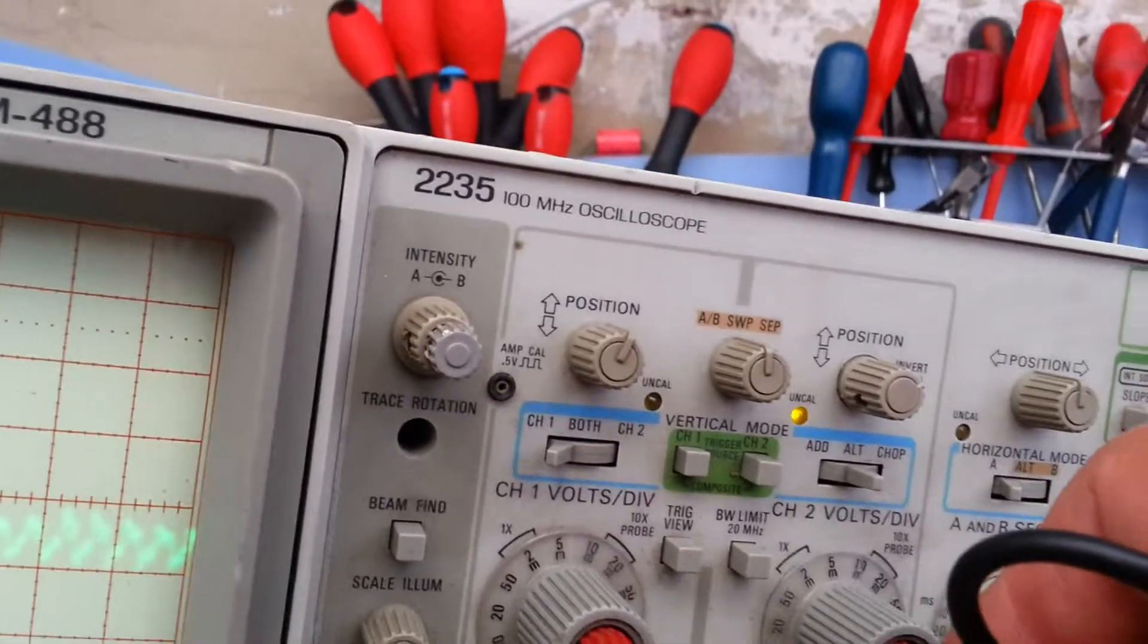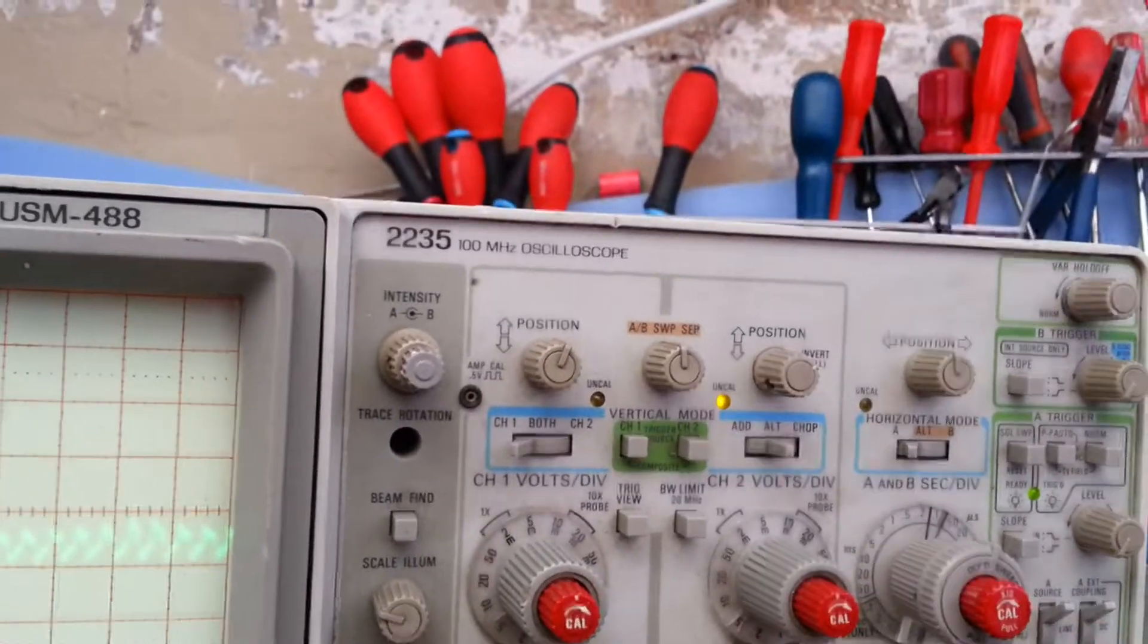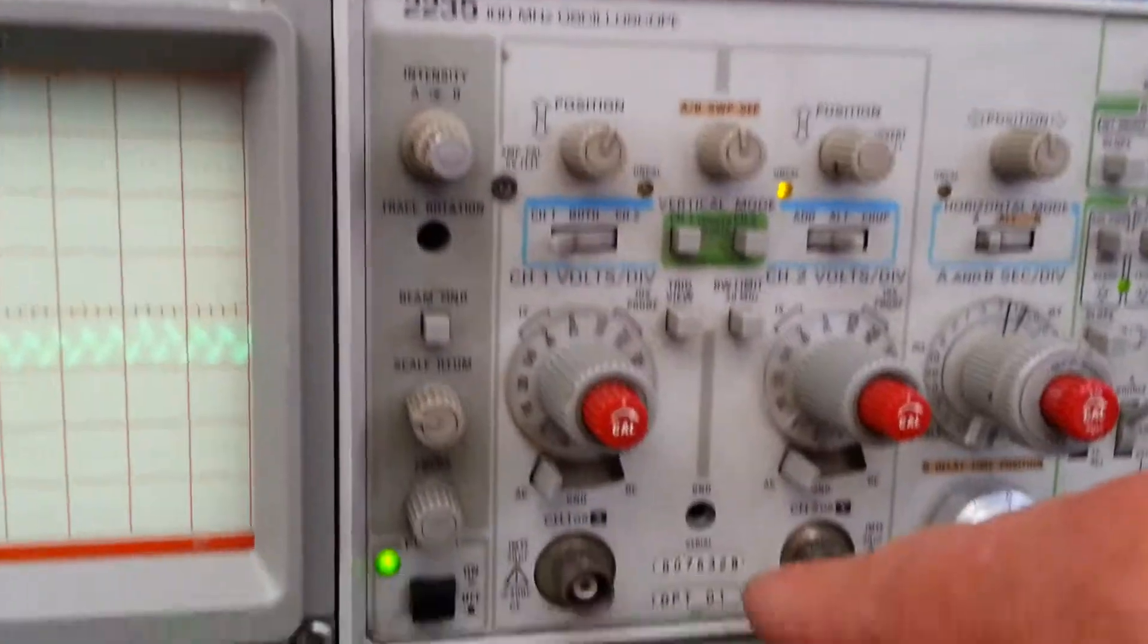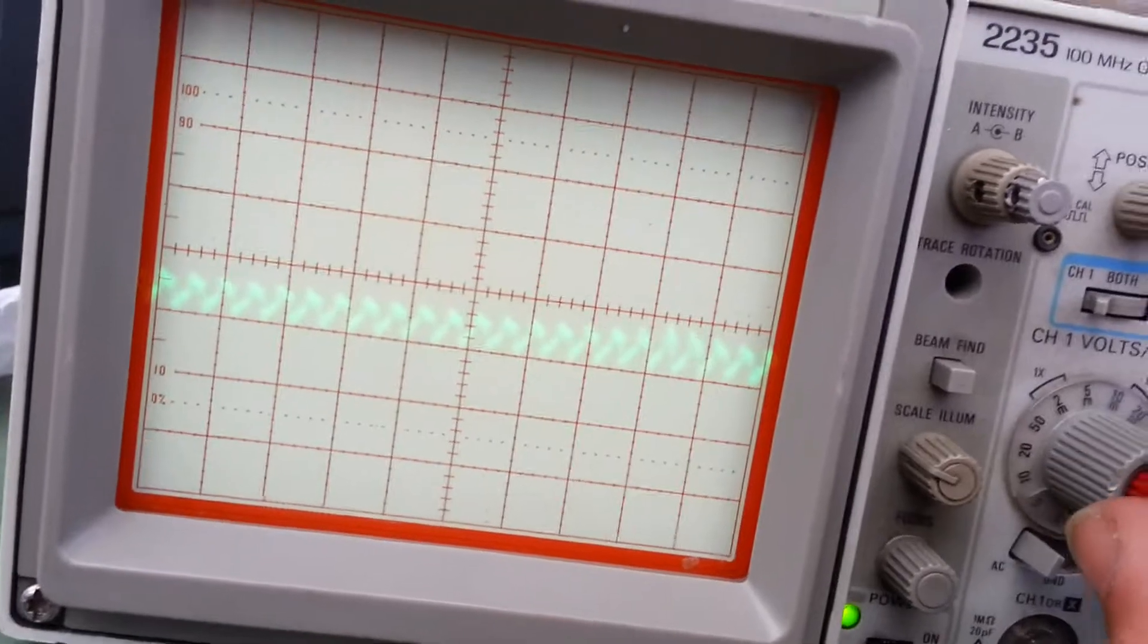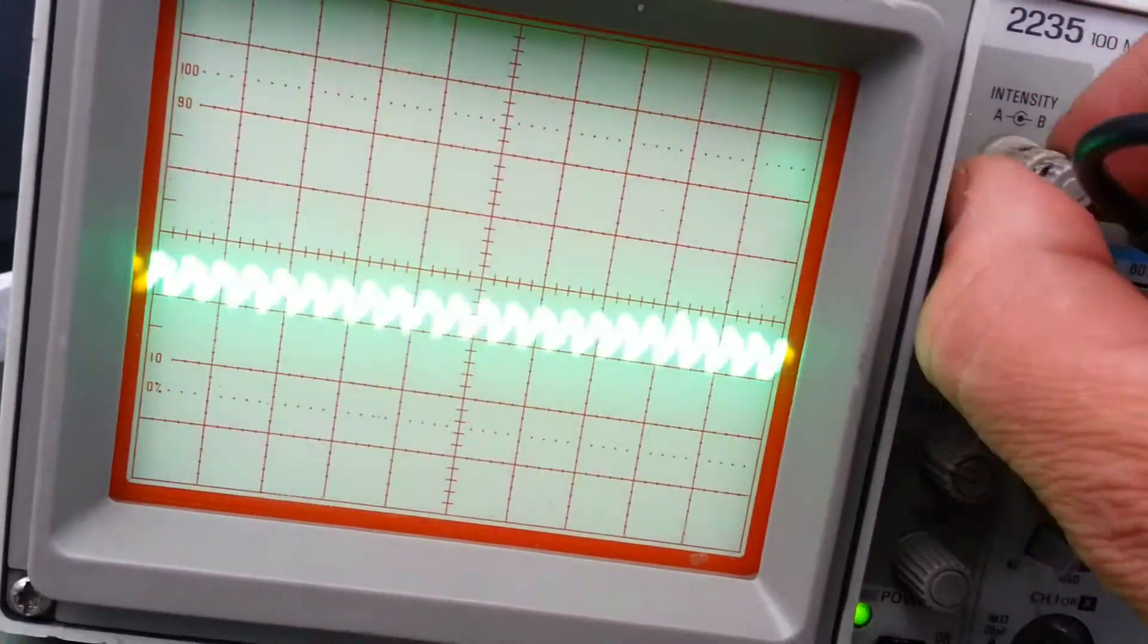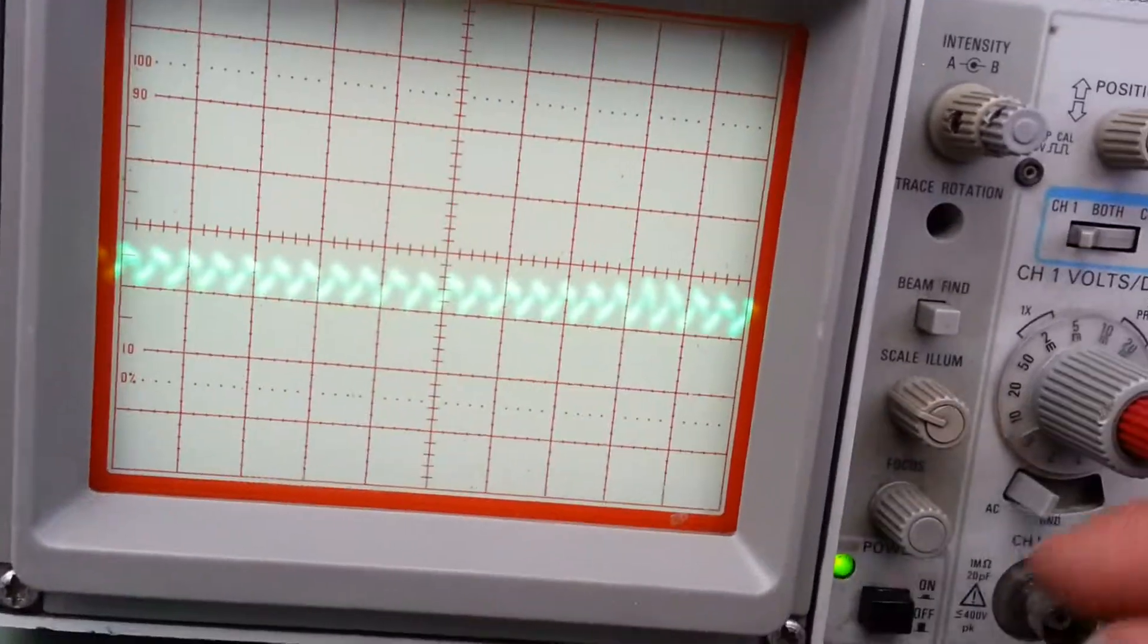There you go. And I think this has got a times 10 mode, but I'm not sure. That might be another scope I'm thinking of. So you can see it is working. I just need to work out what that hump is in the screen. And if I can get rid of that, then...